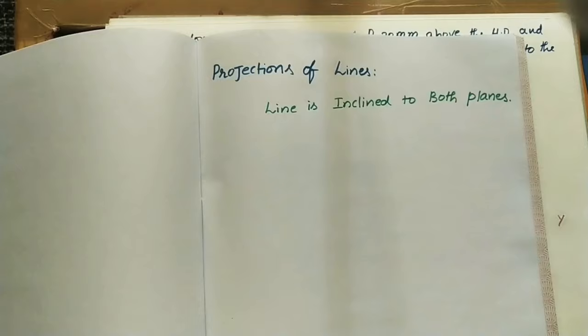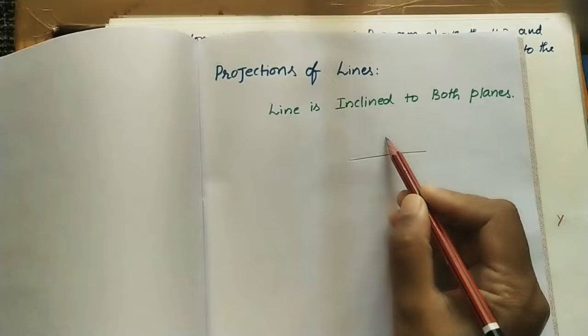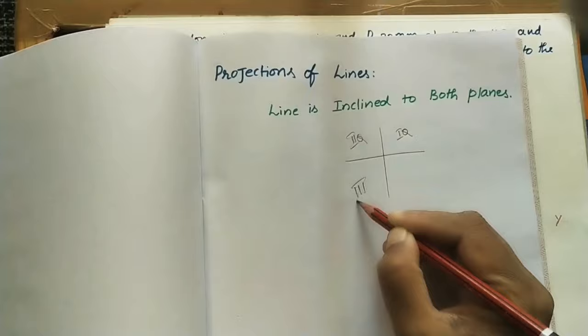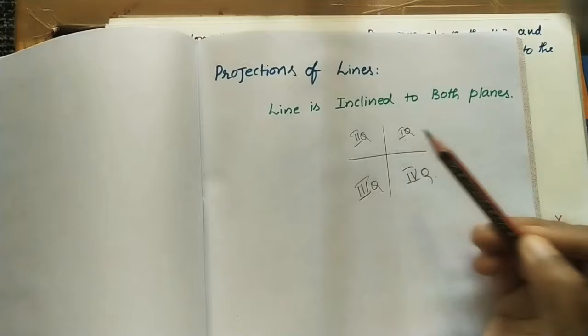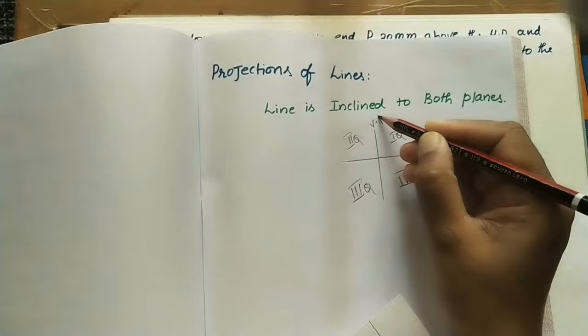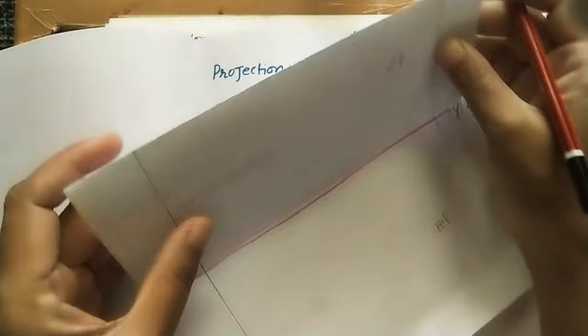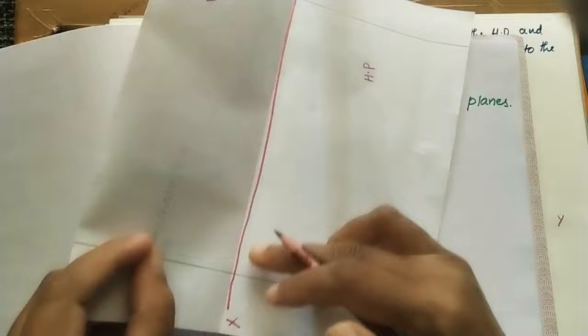The line is in the first quadrant. In the graph, this is the first quadrant, second, third, and fourth. Whatever lines we take in these projections, we consider the line is in the first quadrant — meaning the line is above the HP and in front of the VP. In 3D view, this plane is the vertical plane (VP), this plane is the horizontal plane (HP), and the line joining both planes is XY, called the reference line. The angle between these two planes is 90 degrees.